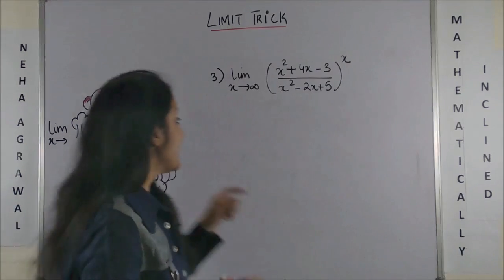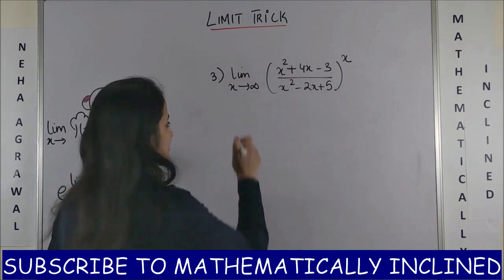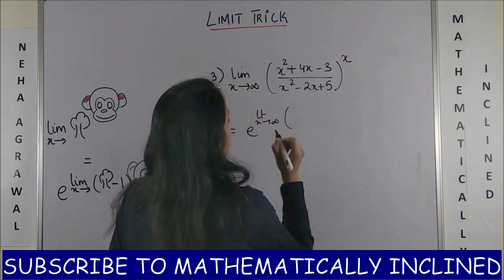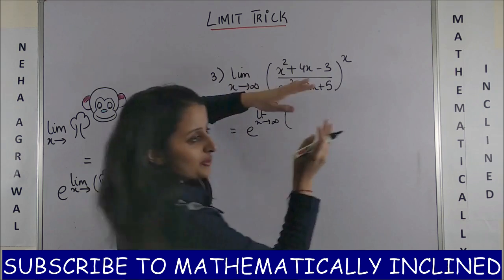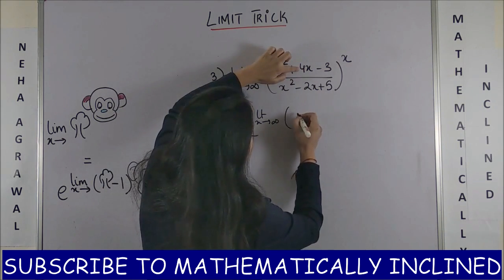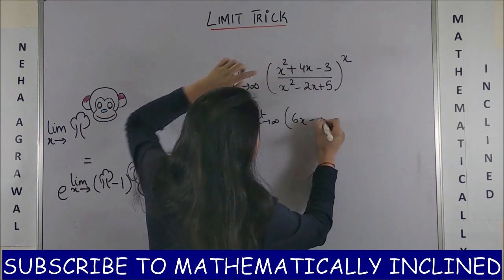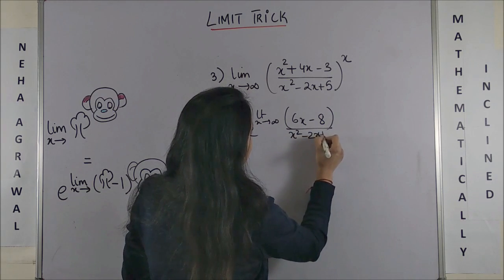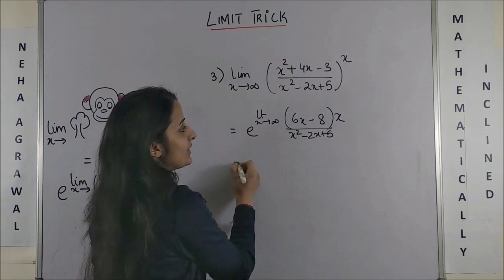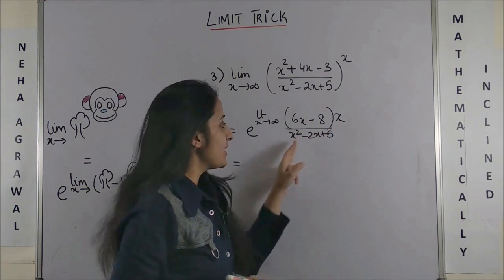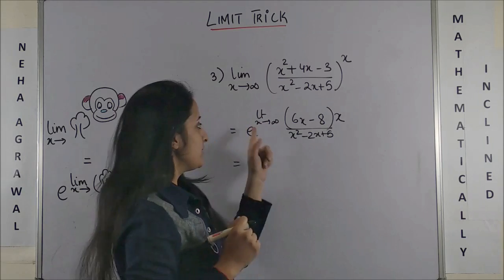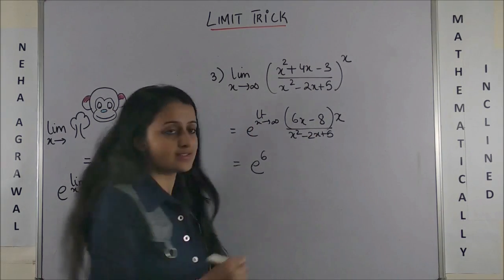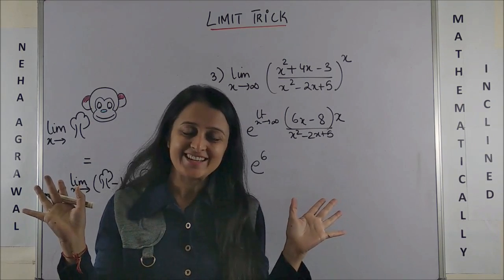Coming back to the third question: again it would be e raised to power limit extending to infinity. Now 3 minus 1, I'm going to do it mentally, so we'll be left with (6x-8) upon the denominator as it is, times x. So now this is 6x²-8x. Same degree, limit extends to infinity, so the answer is simply 6/1 or 6. That's the answer.